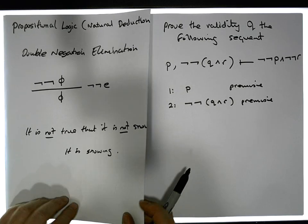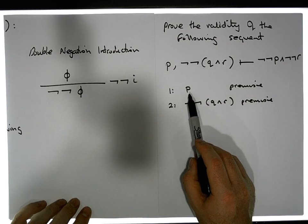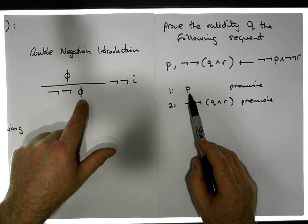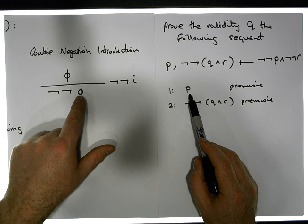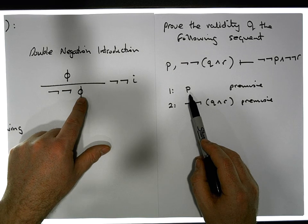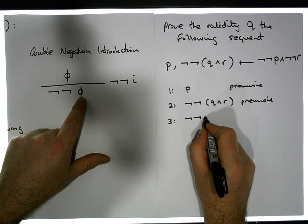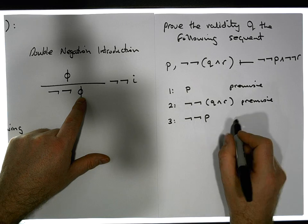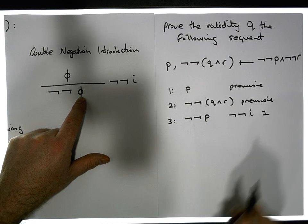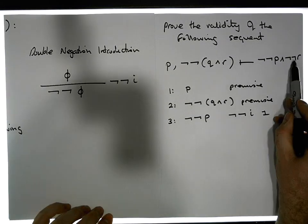From an introduction perspective, we can always introduce double negation. We have p that's true in our premise — that's our phi — and from a double negation introduction perspective we can always introduce it with no problem. So in step three we have ¬¬p, introduced using the rule double negation introduction from line one of our proof.